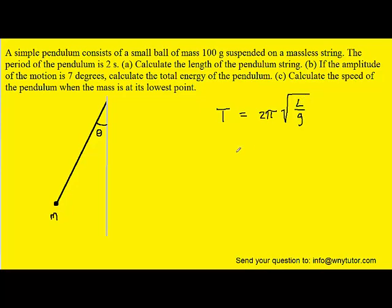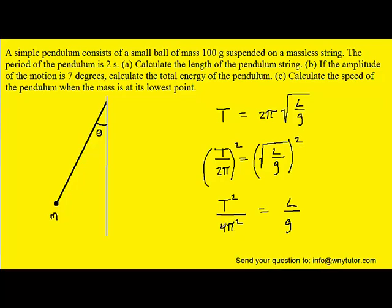We are asked to solve for L, so we could divide both sides of the equation by 2π. We could then square both sides of the equation so that we can get rid of the square root on the right-hand side. When we square the 2π in the denominator it becomes 4π². Then we can multiply both sides by g in order to isolate the length L.